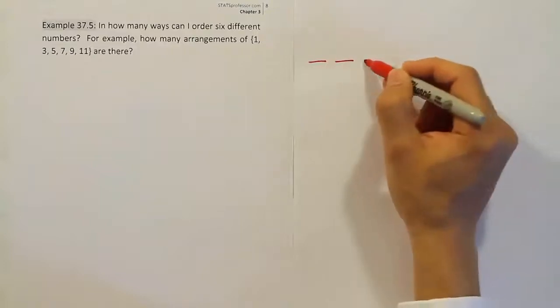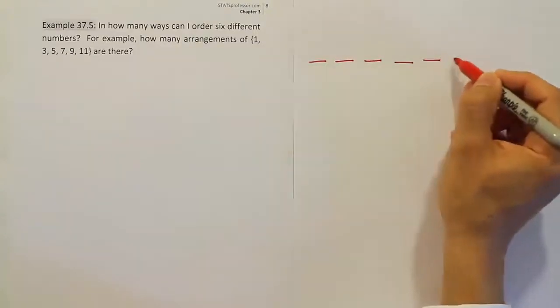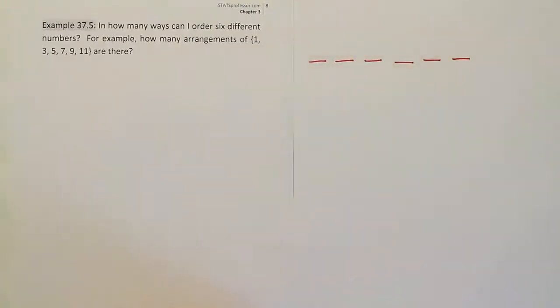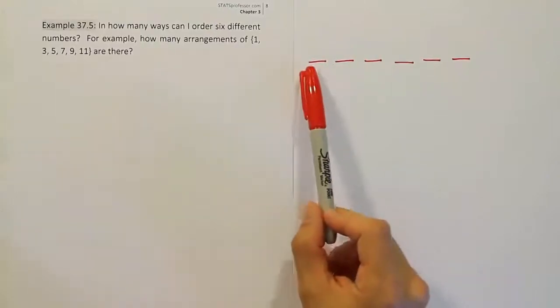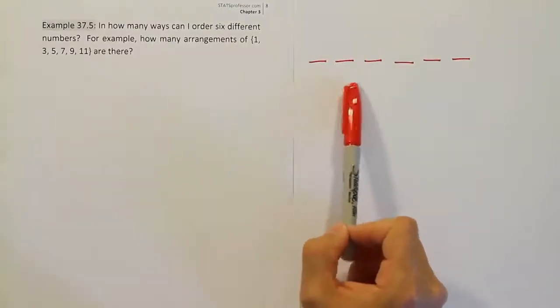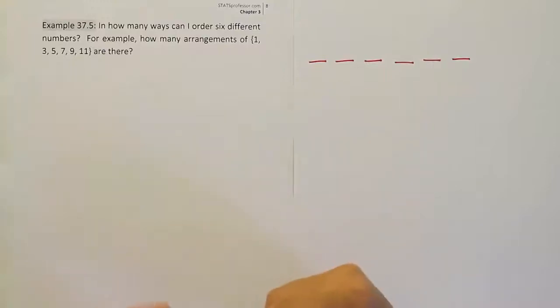So one, two, three, four, five, six spots. And I can think about which number I want to put into each position or spot. And that will basically scramble the numbers up, won't it?